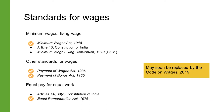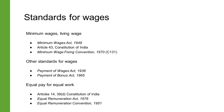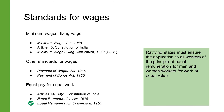These constitutional principles are advanced through the Equal Remuneration Act of 1976, which prohibits employers from discriminating on the grounds of sex when it comes to remuneration for the same amount and nature of work. Work of a similar nature is defined as work for which the skill, effort, experience, and responsibility required are the same. This law was later amended to prohibit discrimination in recruitment and conditions of service as well. The Code on Wages of 2019 was notified in August 2019 but has not yet come into effect.